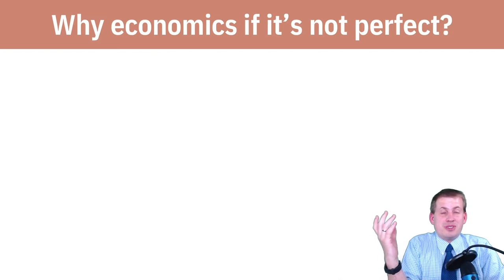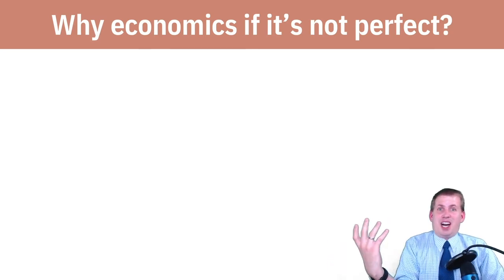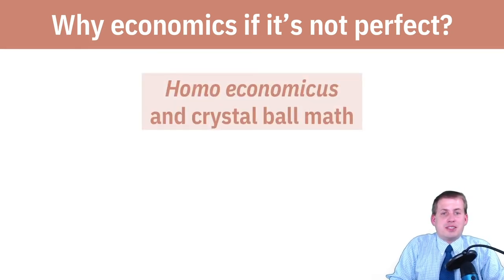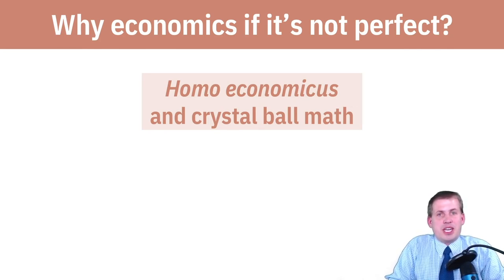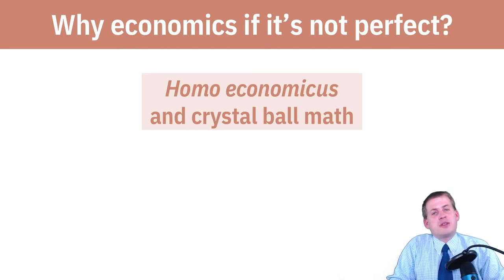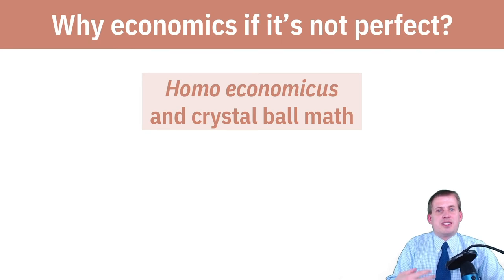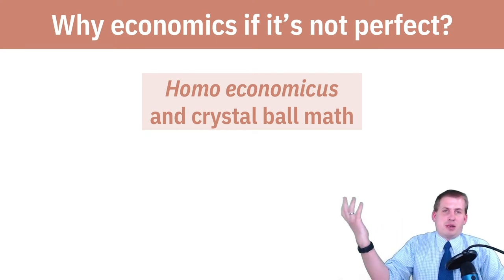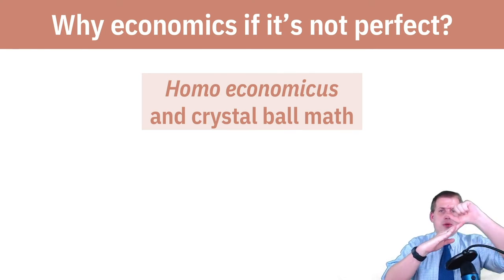Lots of people complain that economics isn't perfect, that the models are not great and make all sorts of assumptions about how people act. There's actually a term for this: homo economicus. In most economic models, there's an assumption that everybody — these fake people interacting with each other — are perfectly rational. They think about long-term consequences of all their decisions and plan out the costs and benefits of every decision. But that doesn't fit reality, so lots of people like to dismiss economics on that basis.